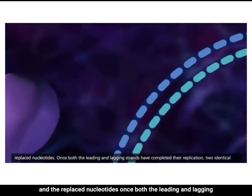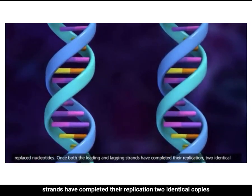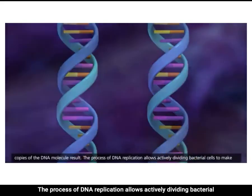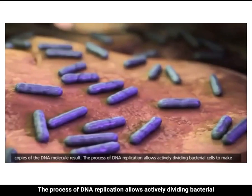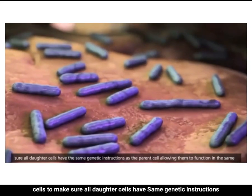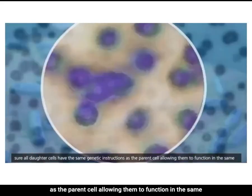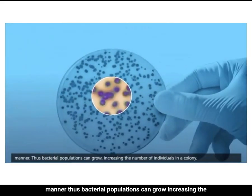Once both the leading and lagging strands have completed replication, two identical copies of the DNA molecule result. The process of DNA replication allows actively dividing bacterial cells to ensure all daughter cells have the same genetic instructions as the parent cell, allowing bacterial populations to grow and increase the number of individuals in a colony.